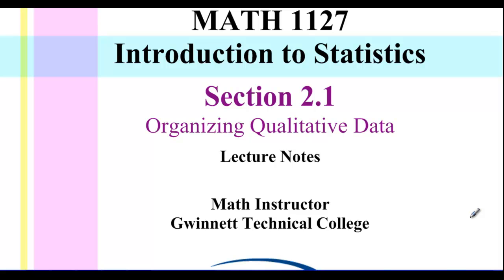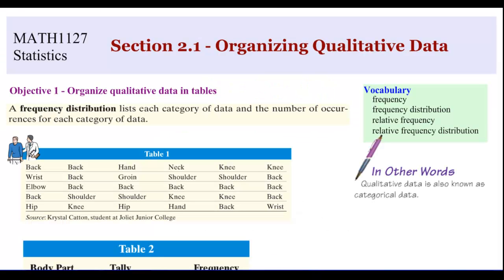In section 2.1, we're going to talk about organizing qualitative data. Hopefully you remember from chapter 1 that quantitative data deals with numbers, and qualitative data is the type also known as categorical data. This is going to be stuff where we can't take the average, because we have things like body parts or colors — things you can categorize but cannot treat the same as quantitative data.